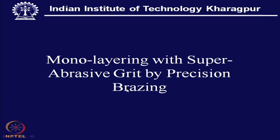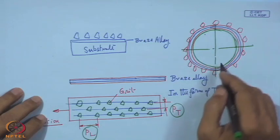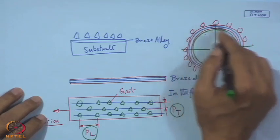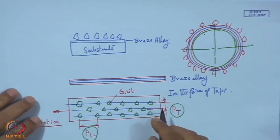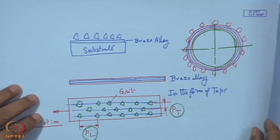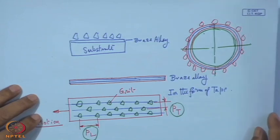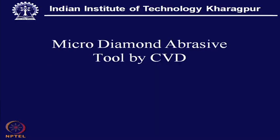The whole purpose of this tool is to achieve one layer formation — a mono layering. It is not just a few micron coating but a layer of abrasive bonded to the substrate. If we can achieve this, it will be a great leverage in manufacturing one of the most promising tools. Now comes micro diamond abrasive tool by CVD.